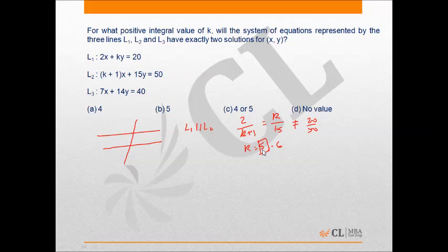Now when k is 5 the equation of the lines are 2x plus 5y is 20 and 6x plus 15y is 50. Now 7x plus 14y equals 40 is not parallel to either of them thus it will give us two solutions.